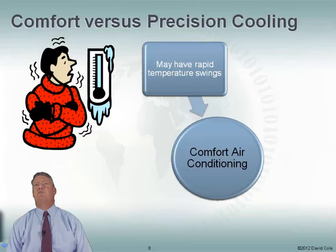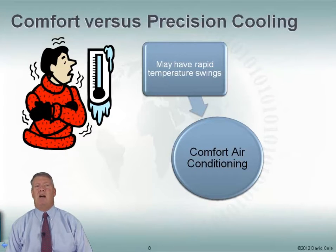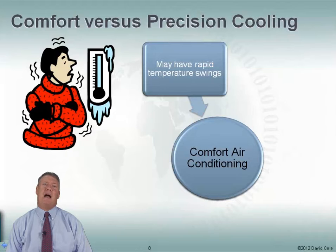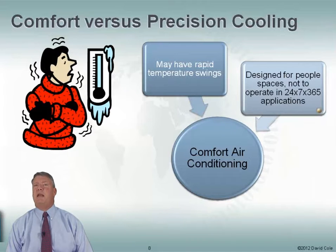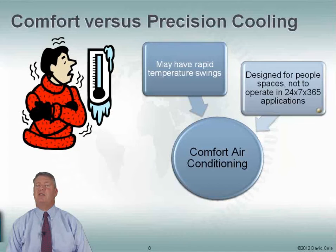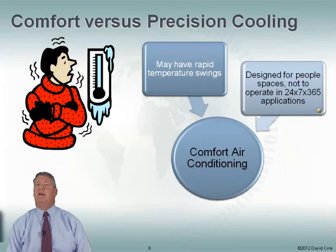Let's look at comfort versus precision cooling. Comfort air conditioning — it's okay if we have rapid temperature swings. My wife and I fight over temperature all the time; I turn the thermostat up, she turns it down. People's bodies can handle those big temperature swings just fine. Comfort air conditioning was designed for people. It doesn't worry about 24 by 7 by 365 applications. If it's wintertime, we can put on a sweater if we need to be a little warmer. Can't put a sweater on a server.